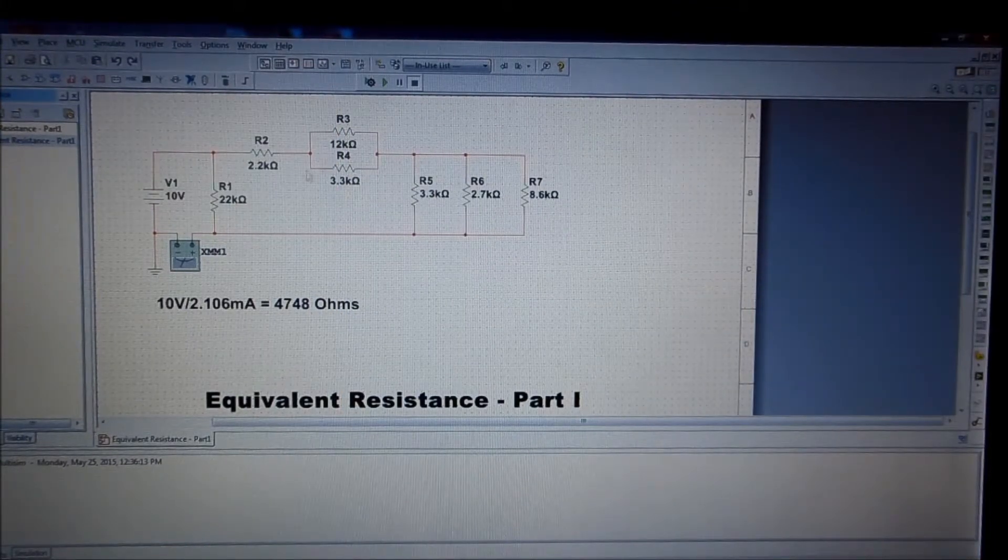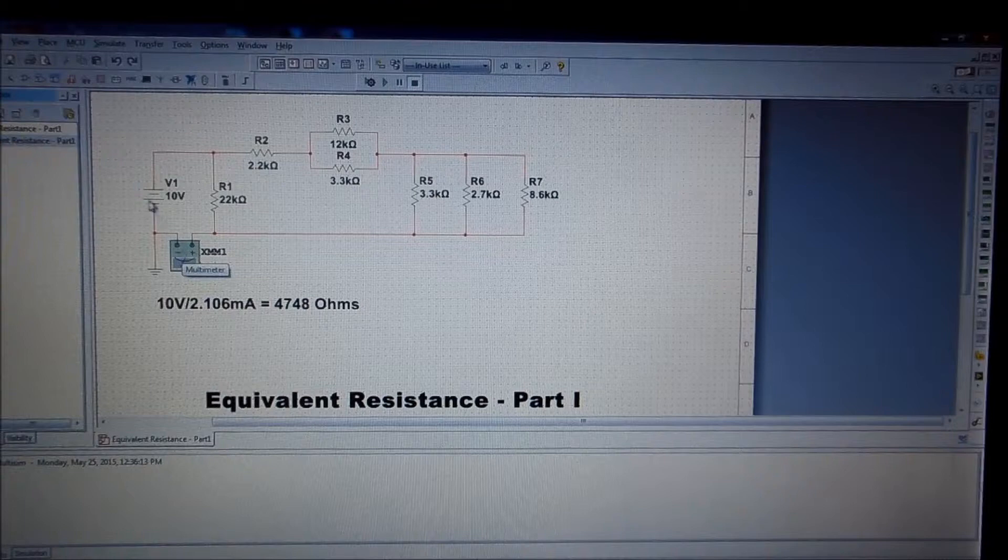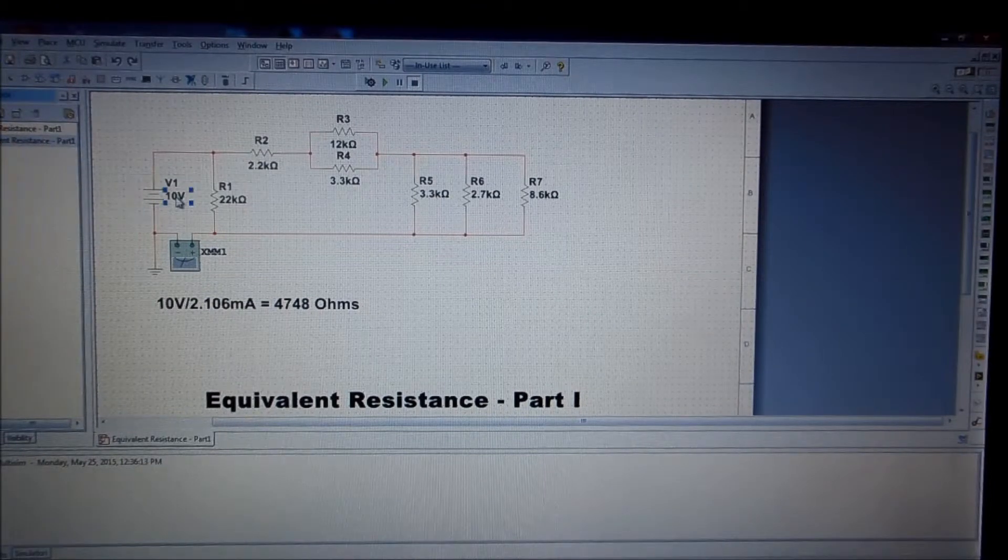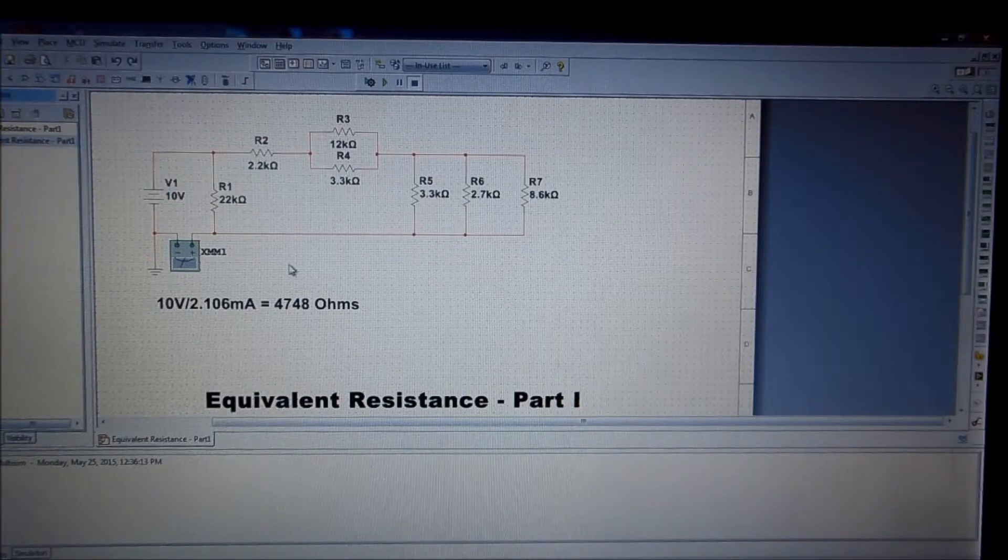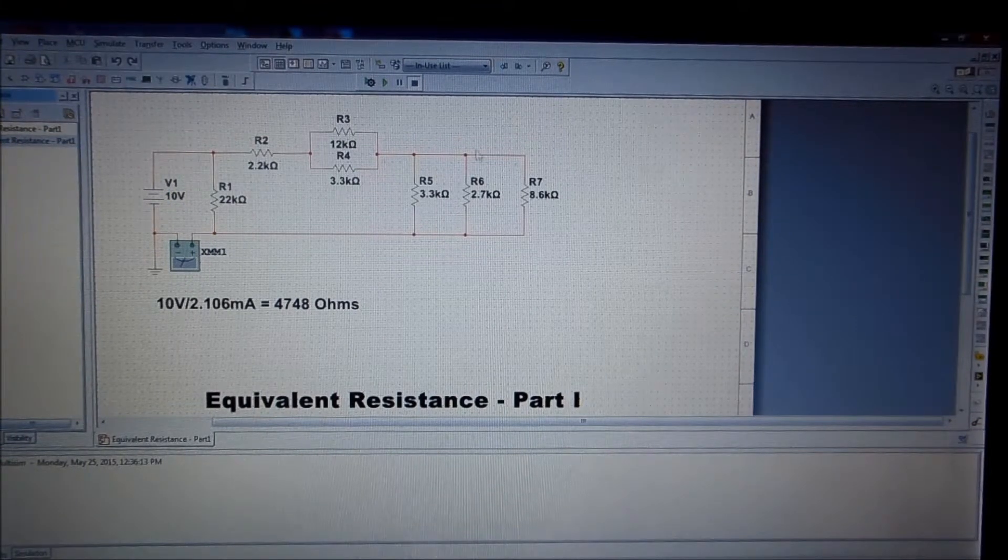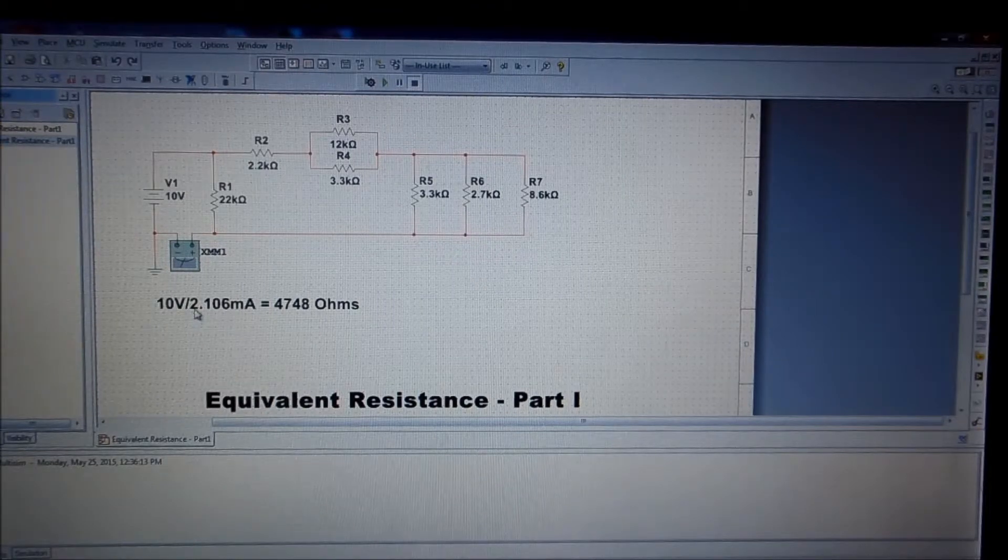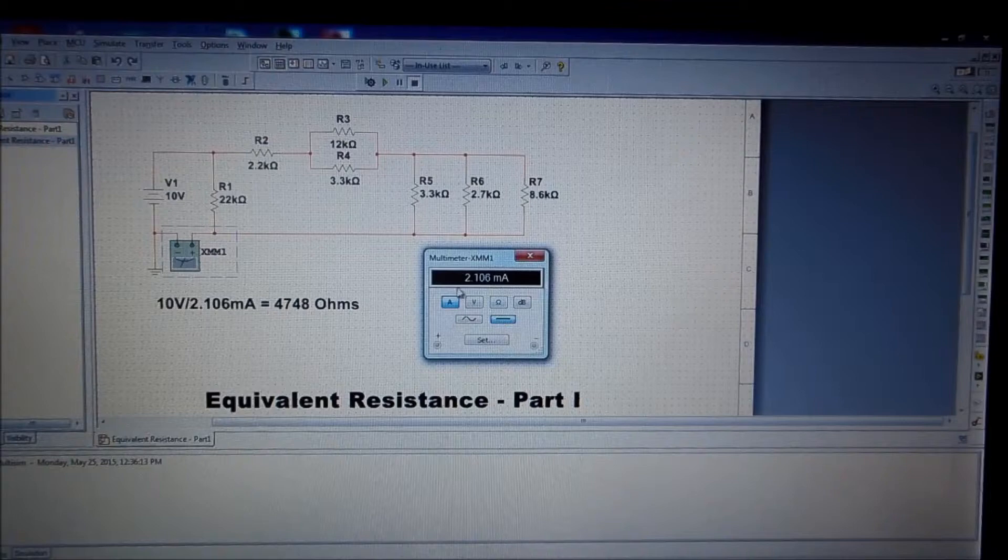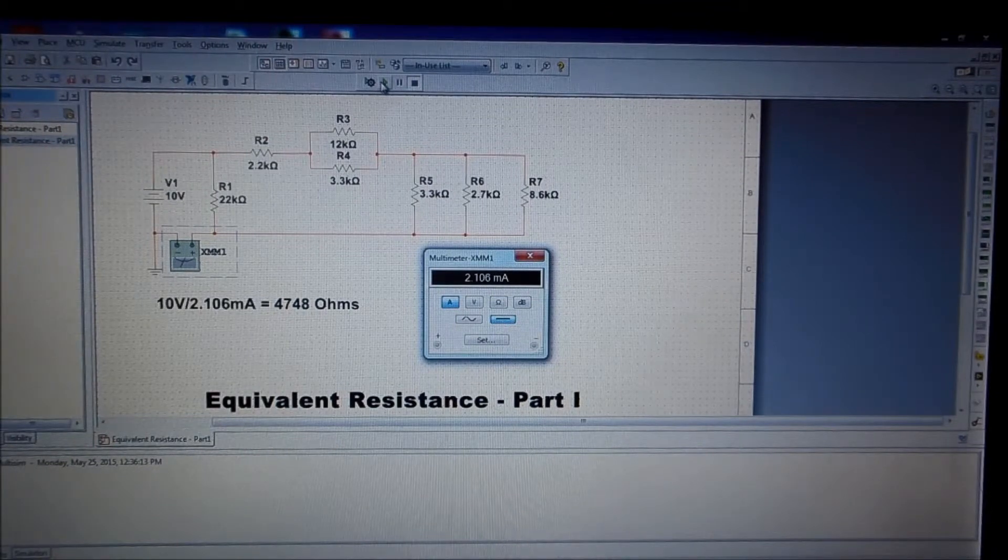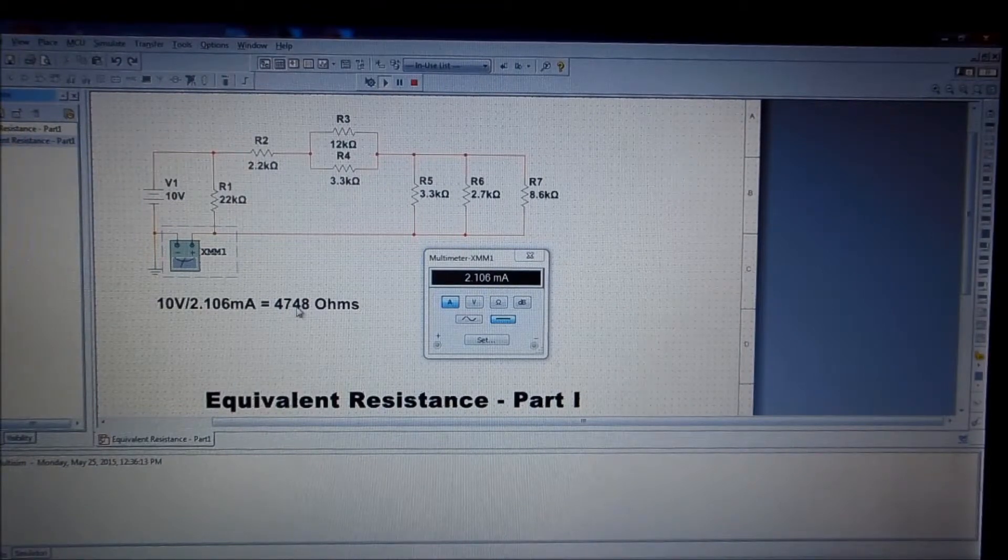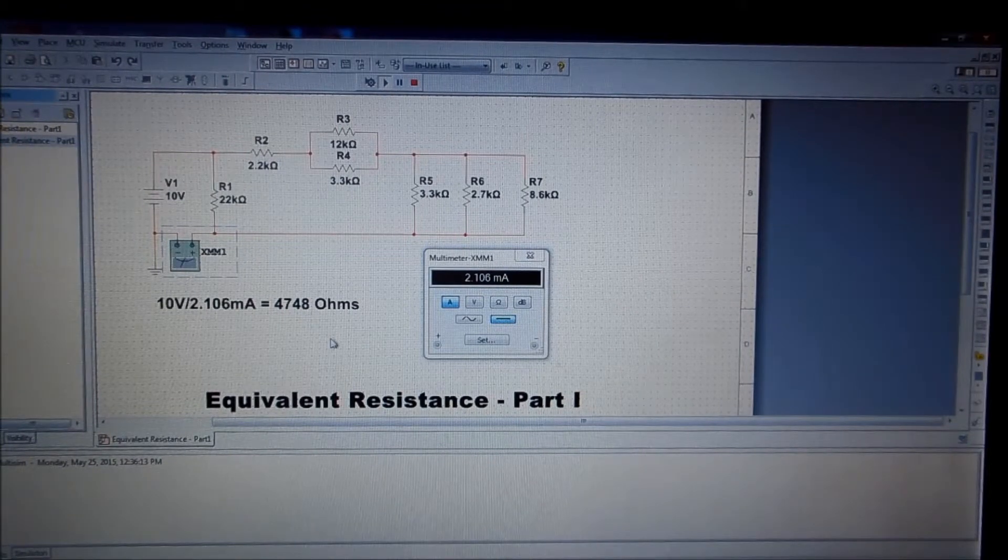So we've got this circuit set up right now, and right now we've got it set up for 10 volts, and when we just put 10 volts across this circuit, exactly as it was, it shows that we've got 2.106 milliamps when we run it across. And that should work out to 4748.